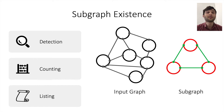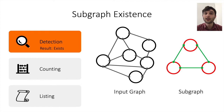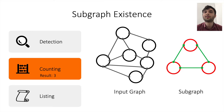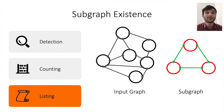We tackle subgraph existence problems. In these settings, we're given some large input graph and a small subgraph, for example a triangle, and we're asked to do one of three things. The first is detection: to find if the small subgraph exists anywhere in the input graph. The second is counting: to give an exact number of the number of times that the subgraph appears. The final and most complicated version is listing: to find actually all these instances.